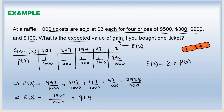We were calculating the gain, but we got a negative result, meaning it is actually a loss. If you buy one ticket, you have an average loss of $1.90. That is the end of this video. Thank you for watching.